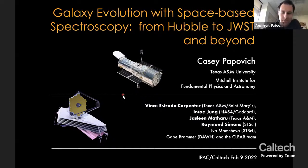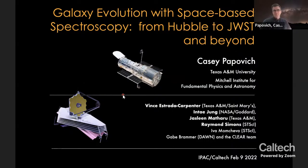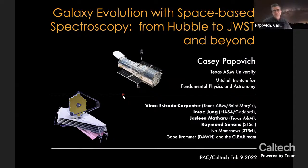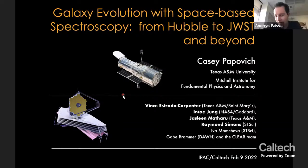Hello everyone, welcome to today's astronomy colloquium. It's a pleasure to have Casey Papovich here. Casey finished his PhD in 2002 at Johns Hopkins University, working with Mark Dickinson and Colin Norman. His thesis was titled 'The Nature of Stellar Content of Galaxies in a Distant Universe.' He then became a postdoctoral research associate and later a NASA Spitzer Prize Postdoc Fellow at the University of Arizona, working with George Rieke. In 2008 he became an assistant professor and later a full professor at Texas A&M University.